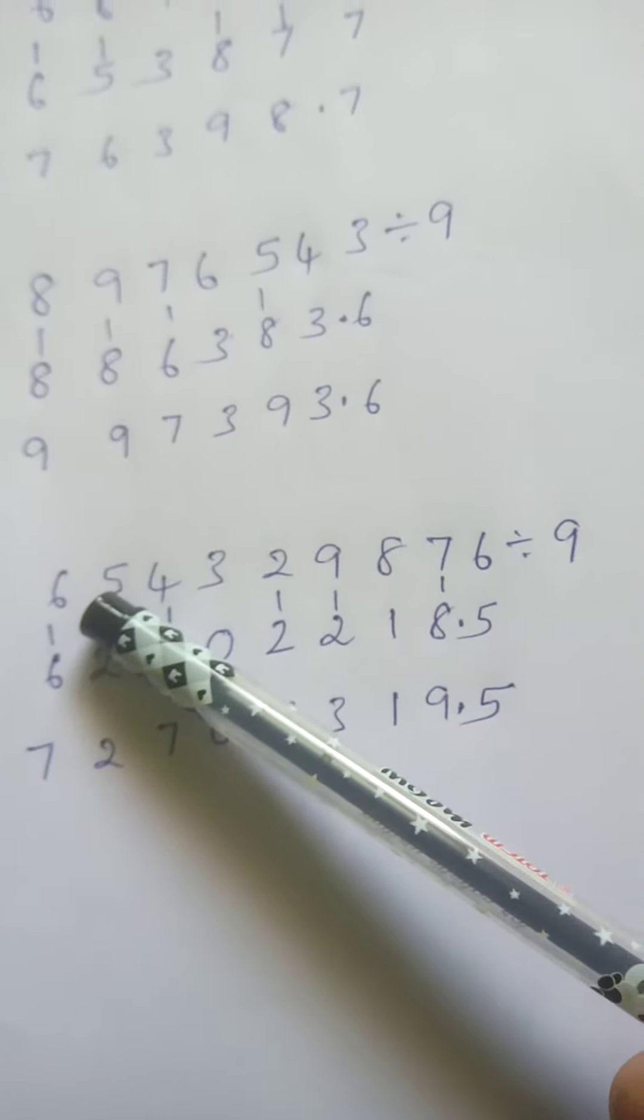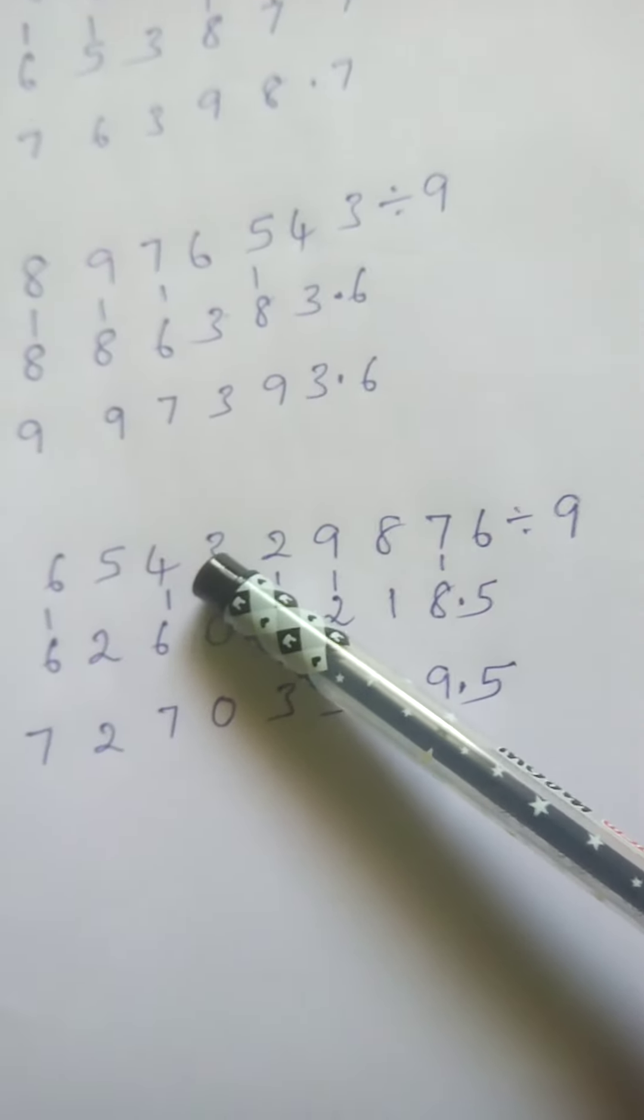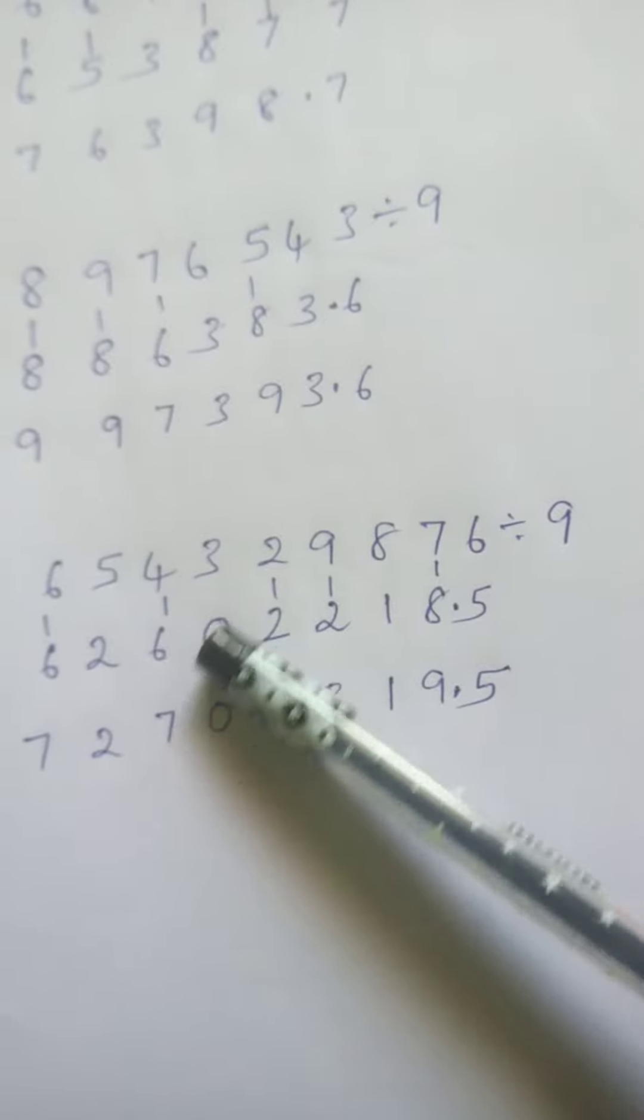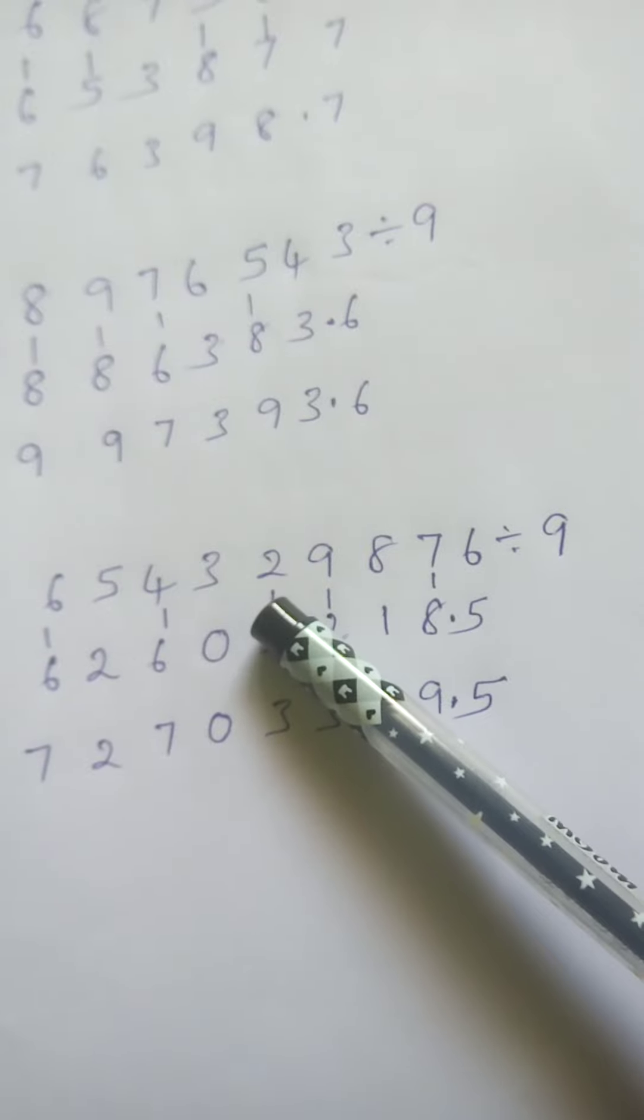11 means subtract 9, so 11 minus 9 is 2, carry 1. 2 plus 4 is 6. 6 plus 3 is 9, 9 minus 9 is 0, carry 1. 0 plus 2 is 2. 2 plus 9 is 11, 11 minus 9 is 2, carry 1.